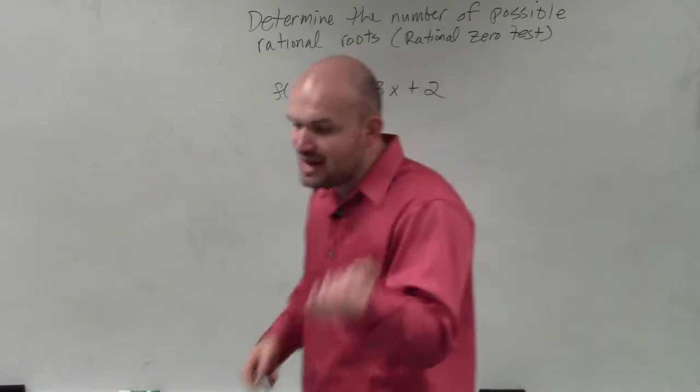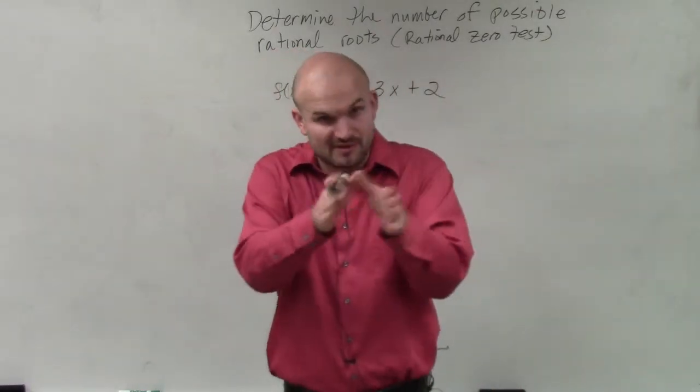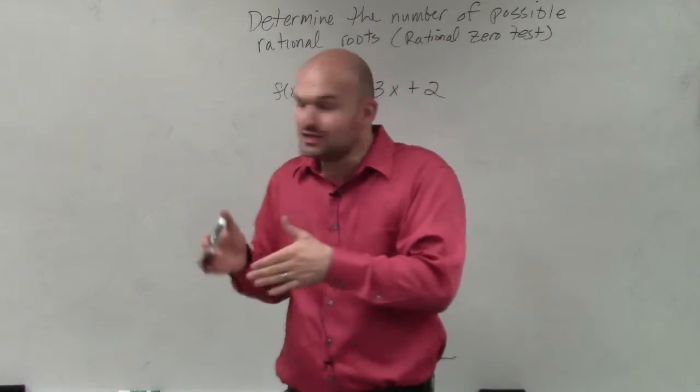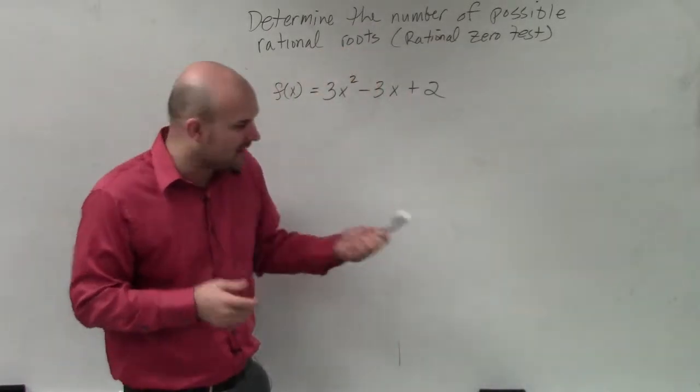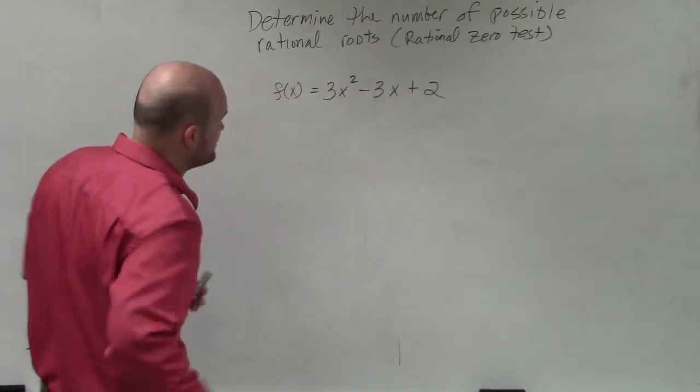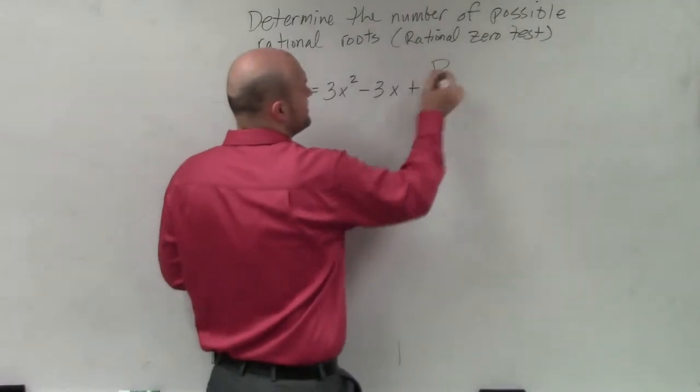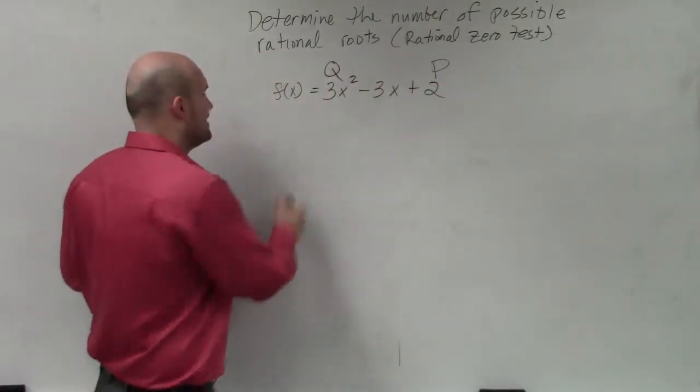So what the rational zero test says is if we're going to find zeros, when we solve for zeros, if it's rational, it's going to be one of these numbers. And basically, all you guys need to do for the rational zero test is you need to determine the factors of p over q. And that's plus or minus.